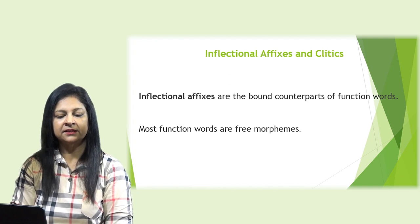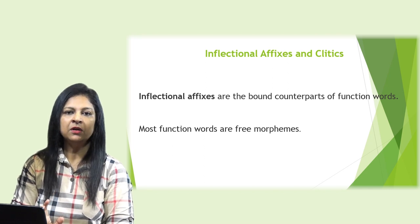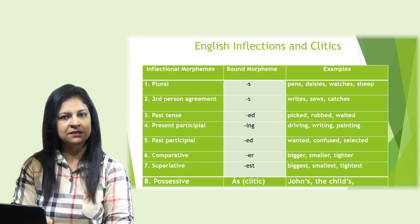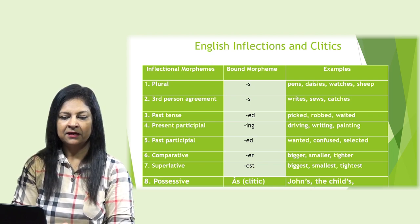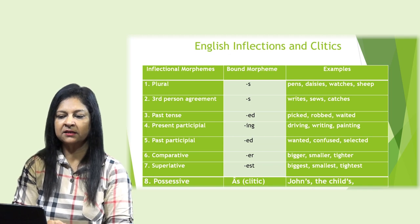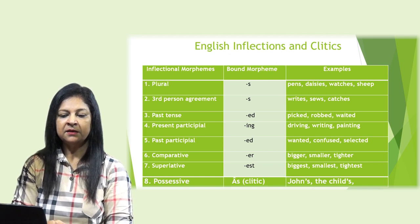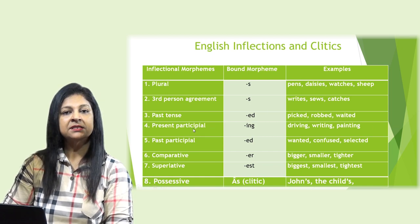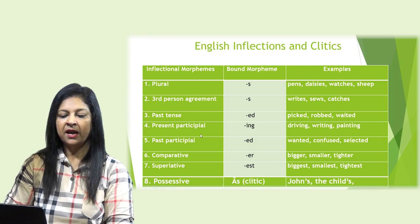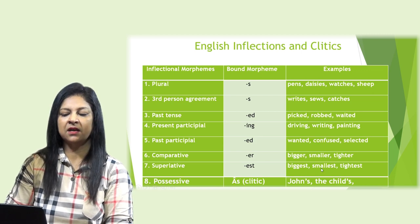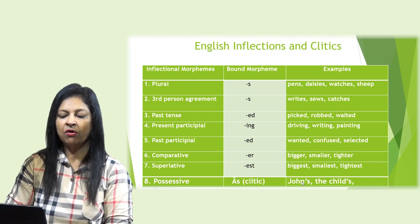Inflectional affixes and clitics. Inflectional affixes are the bound counterparts of function words, and most function words are free morphemes. Looking at the table of English inflections and clitics: the plural inflection adds -s, as in pens, daisies, watchers, and sheep. Third person agreement gives forms like writes, sieves, catchers. Past tense gives picked, robbed, waited. Present participle -ing gives driving, writing, painting. Past participle gives wanted, confused, selected. Comparatives give bigger, smaller, tighter. Superlative -est gives biggest, smallest, tightest. Possessives as clitics: John's, the child's.